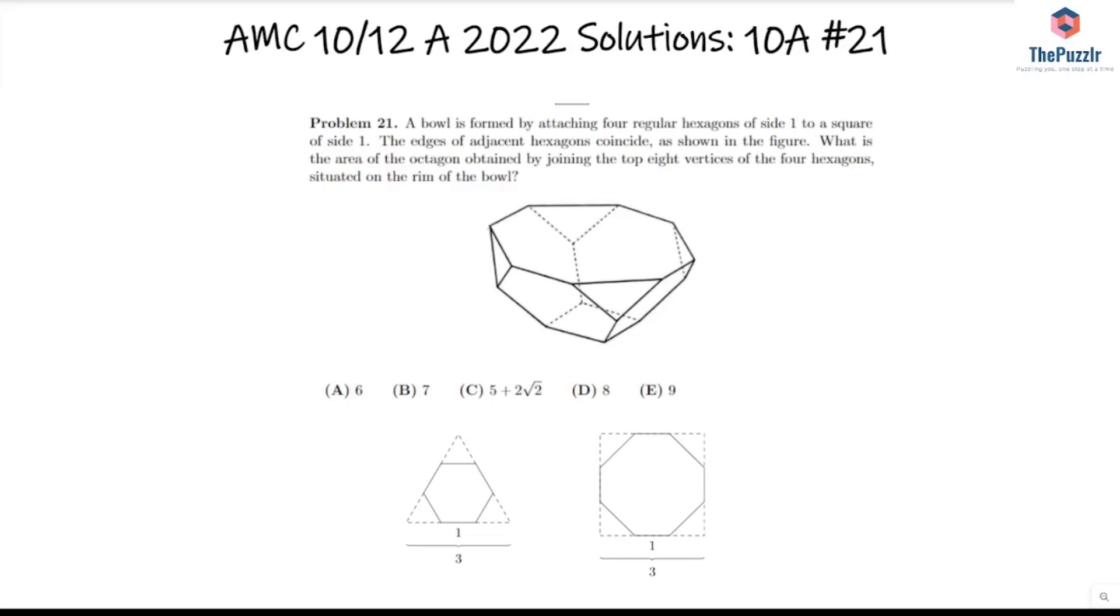We have a bowl that's formed by attaching four regular hexagons of side 1 to a square of side 1. The edges of adjacent hexagons coincide as shown in the figure. What is the area of the octagon obtained by joining the top eight vertices of the four hexagons situated on the rim of the bowl?